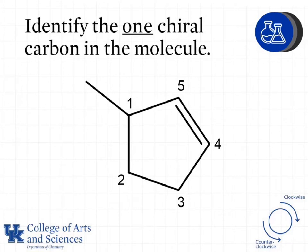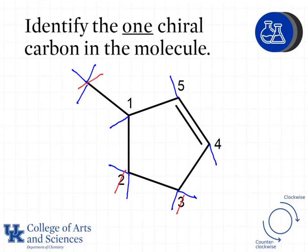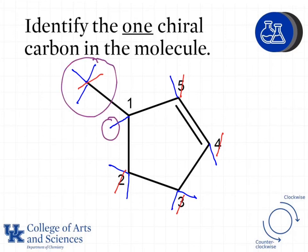Identify the one chiral carbon in the molecule. First we draw in our hydrogens, then eliminate any carbons that have two or more hydrogens attached. We can eliminate carbons two and three as well as the substituent group because they all have two or more hydrogens. We also eliminate carbons four and five because they're involved in a double bond — only three groups are attached, so they cannot have four unique groups. The only carbon left is carbon one. It has a CH3 group, an H, the counterclockwise direction, and the clockwise direction. As we go to carbons two and five to work around the ring, carbon two is CH2 whereas carbon five is CH — we see something different, therefore carbon one is chiral.